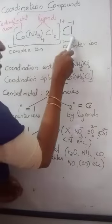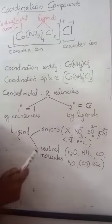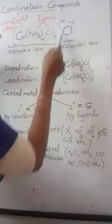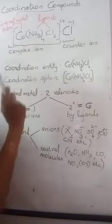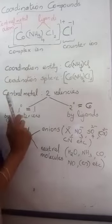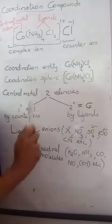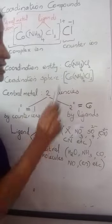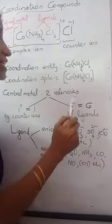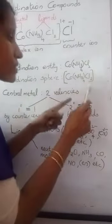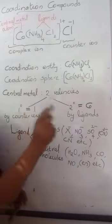This counter ion part is not directly bonded to cobalt. Inside the square bracket we have written the central metal atom and the ligands — that part is called the coordination entity. The coordination entity includes the central metal atom and ligands, and we always enclose it inside a square bracket. Including the square bracket, it is called the coordination sphere.